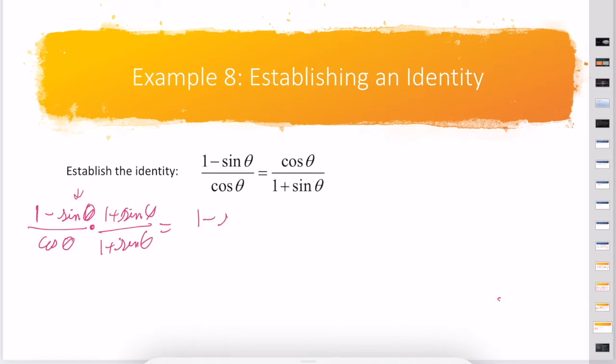So I get 1 minus sin² θ over cos θ times 1 plus sin θ. We're not going to factor. What we need to do is substitute.